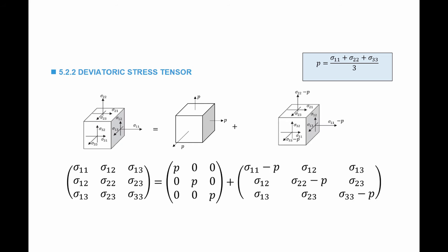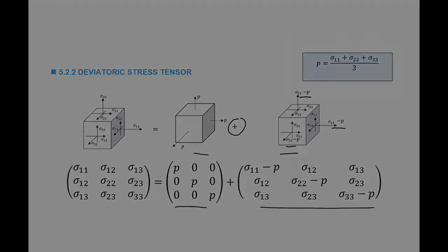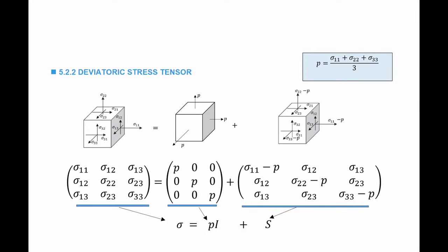The second component contains the remaining stress values. The normal components become sigma_11 minus P, sigma_22 minus P, and sigma_33 minus P. When those two stress states are added, we recover the original stress state. The first part is called the hydrostatic stress, and the second is called the deviatoric stress tensor. In matrix form, sigma equals P·I plus S, where S is the deviatoric stress tensor.